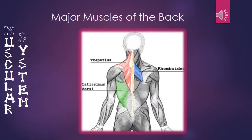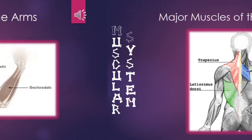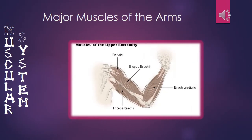The major muscles of the back, starting from the top, are the trapezius, rhomboids, and latissimus dorsi. Starting from the top, the major muscles of the arm include the deltoid, bicep group, tricep group, and the brachioradialis.